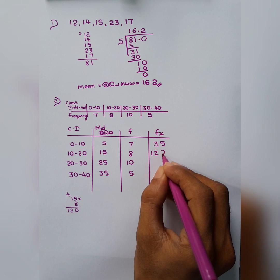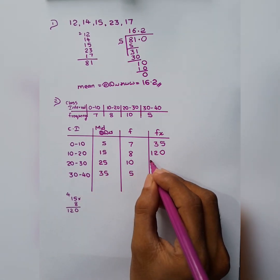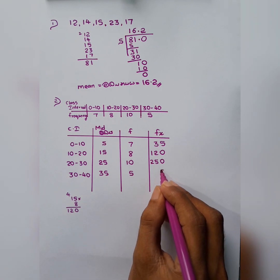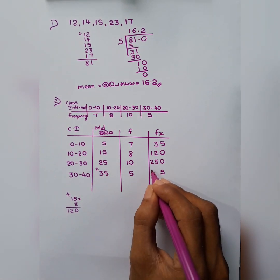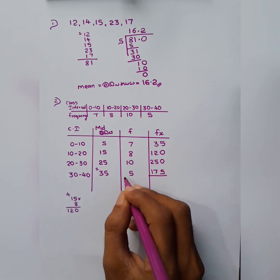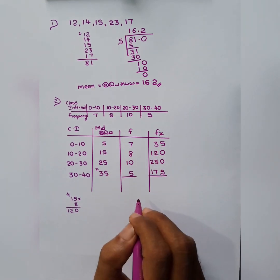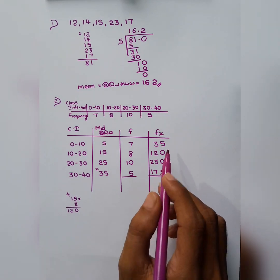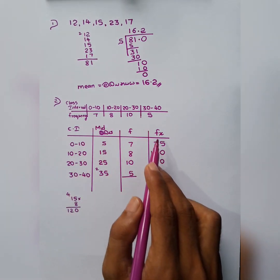And then 25, 10's are 250. Easy. And now 5, 5's are 35. Sorry, 25. 2 remaining 5, 3's are 15 plus 2 is 17. Then add these. We have to add the frequency and fx.